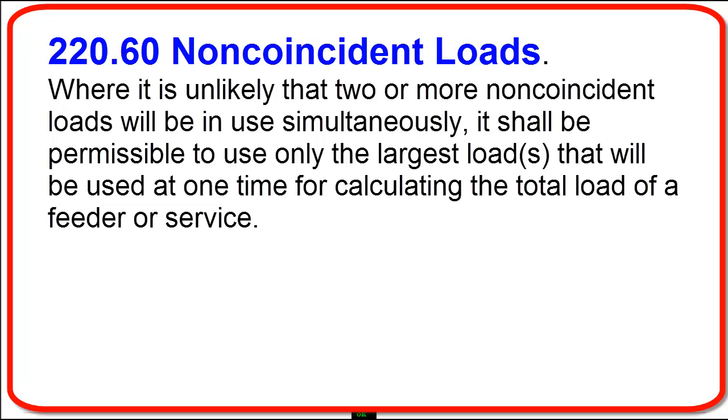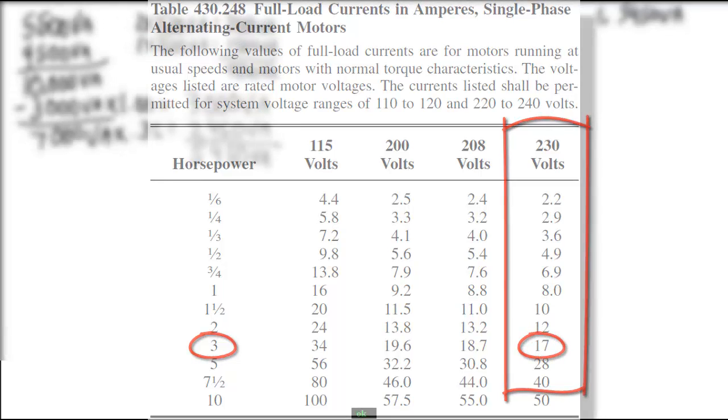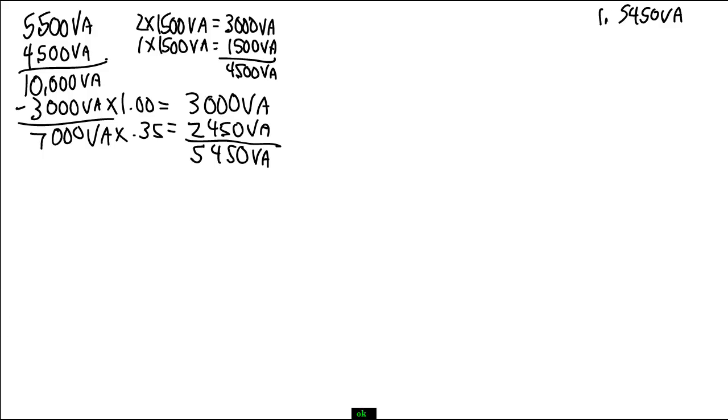Because we are looking at a motor load, we do have to look into another article to figure out what our ampacity is going to be for that. We need to look at Table 430.248. That is full load current in amps for single-phase alternating current motors. If we go down to 3 horsepower and we go over to 230 volts, that gives us 17 amps. So I need to take my 17 amps, and I need to take that times 240 volts, and that's going to give us 4,080 VA.